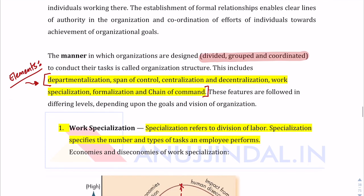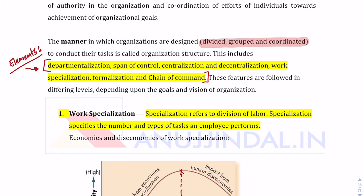The elements of organization structure include: departmentalization, span of control, centralization, decentralization, work specialization, formalization, and chain of command. Whenever you are heading an organization, all these questions will be in your mind.